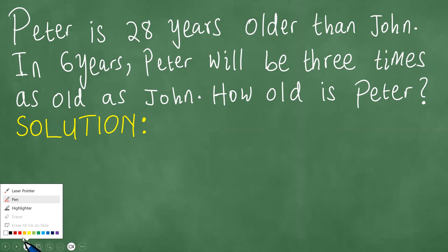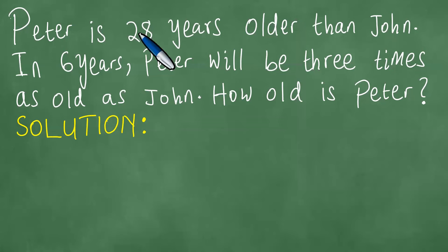We note that Peter is 28 years older than John. In six years, Peter will be three times as old as John. How old is Peter?